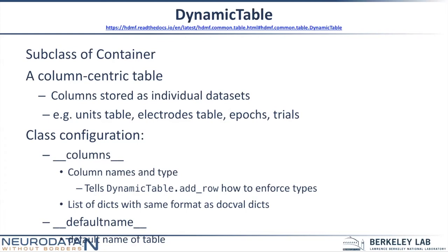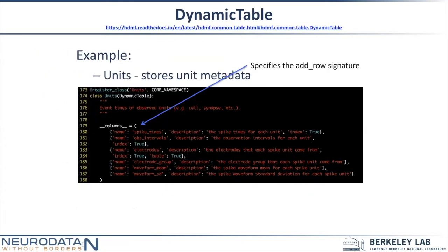You may want to have some predefined columns. The __columns__ and __default_name__ dunder properties provide functionality for auto-generating and defining defaults for DynamicTable. Units is the table for storing information about spike units. These columns are defined by the __columns__ class property, and similar to docval it takes in a list of dictionaries.